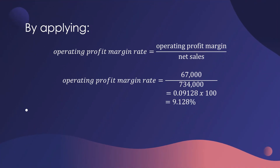To compute the operating profit margin rate, the formula is: Operating Profit Margin divided by Net Sales. So 67,000 divided by net sales of 734,000 gives us 9.13%. The operating profit measures the percentage of profit available after deducting cost of sales and operating expenses. A higher operating profit margin is favorable to the business.